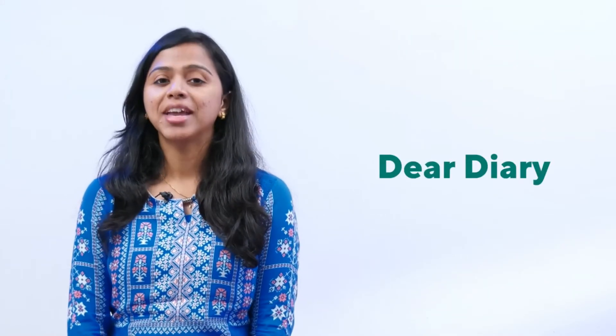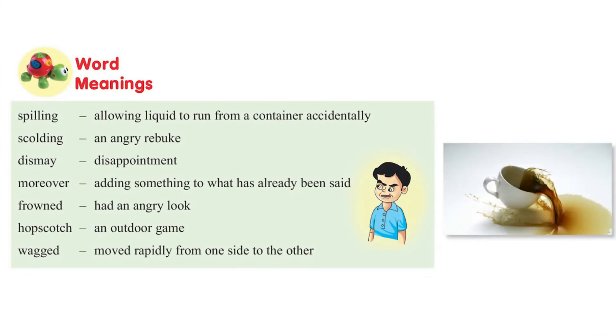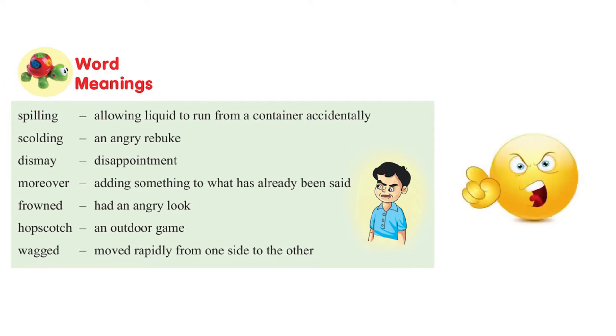In Unit 3, we come across a story called 'Dear Diary.' In this story we come across many new words. Let's learn the word meanings. The first one: spilling - allowing liquid to run from a container accidentally. It's always good to clean up after spilling something on the floor. Scolding means an angry rebuke.